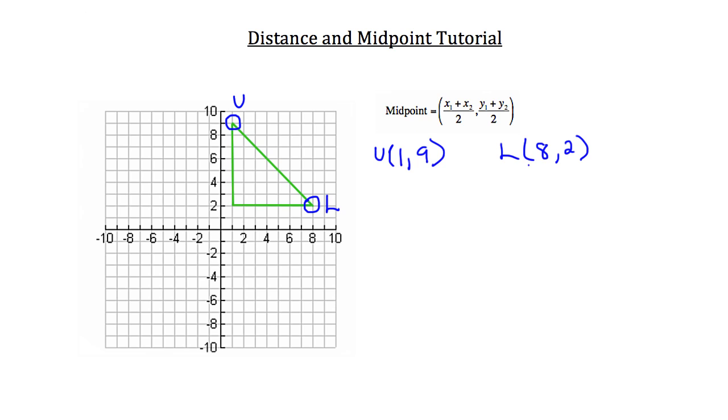So now we can use the midpoint formula here to solve for the midpoint of line segment UL. So midpoint is equal to the x coordinate from point 1, and point 1 will make U, so the x coordinate from point 1 is 1, plus the x coordinate from point 2, which is point L, and that x coordinate is 8, all divided by 2,